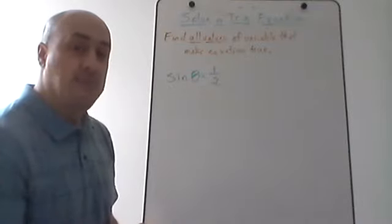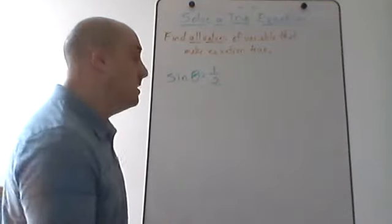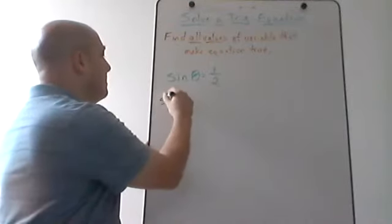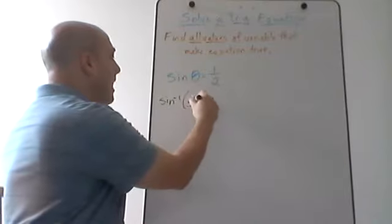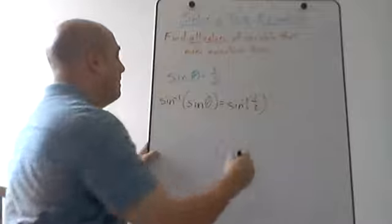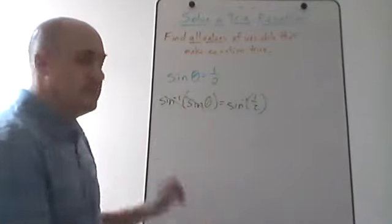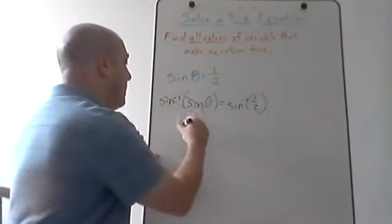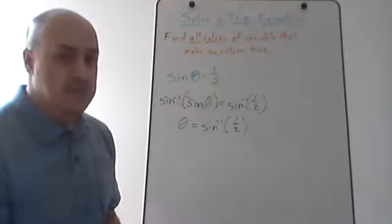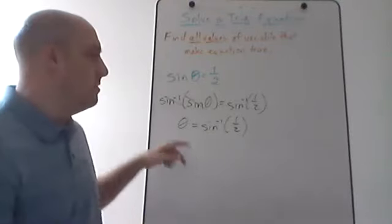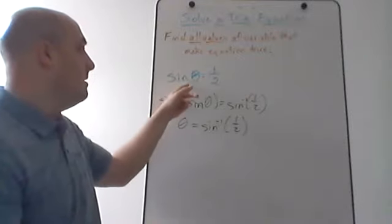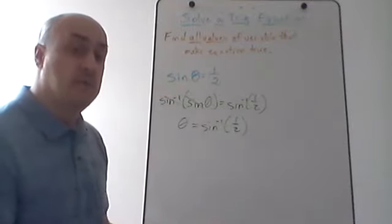So: sine of theta equals one half. I need to find all the solutions in the first period of the sine function between zero and two pi. When solving a trig equation, I use the inverse trig function — I do sine inverse on both sides. The sine inverse cancels out the sine function and I get theta equals sine inverse of one half. When solving a simple trig equation like this, you think of the unit circle definition: sine of the angle gives you the y-coordinate of your terminal point.